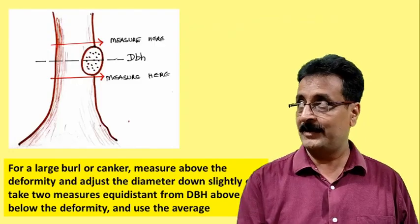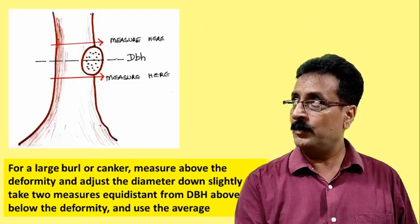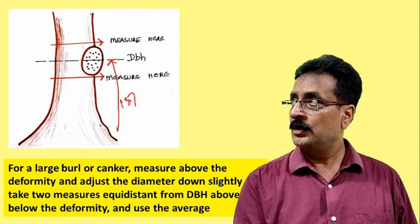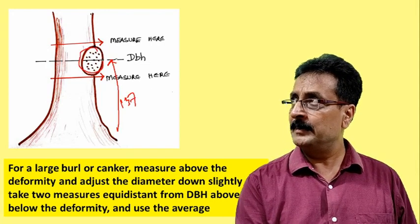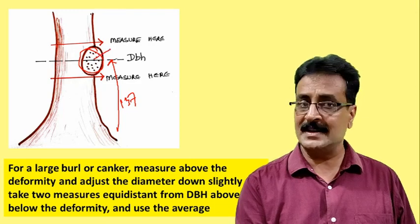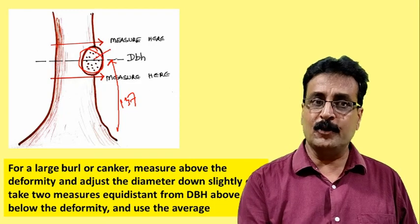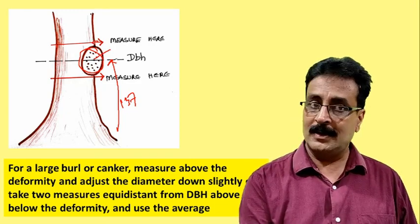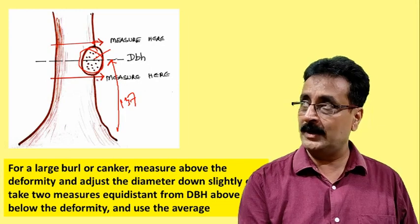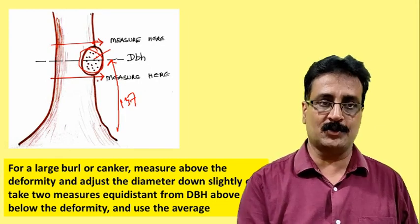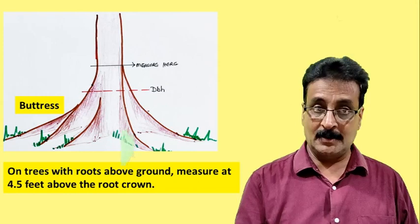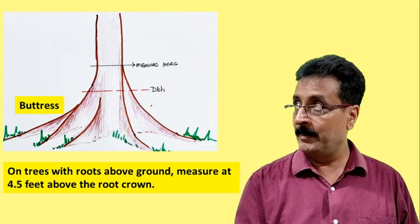Similarly, if at 1.37 meters there is a bulging burr, canker, or any other deformity, you take measurements above and below that deformity and make an average of the two readings.